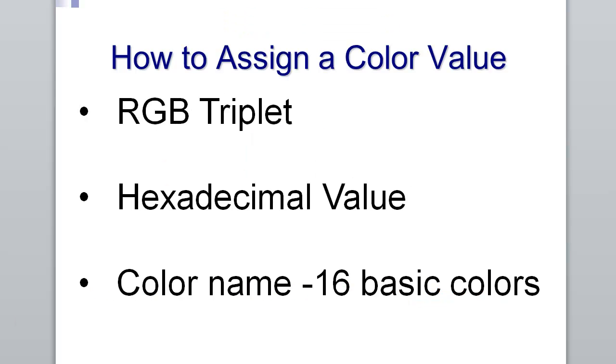How are we assigning color values in the HTML document? There are three basic ways that we are assigning it. CSS3 gives us some additional ways, and I have it included in the handout. We're looking at an RGB triplet, a hexadecimal value, and a color name.